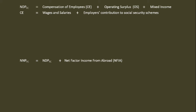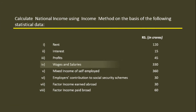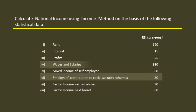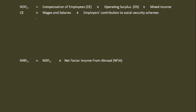Wages and salaries are 330 crores, and employer's contribution to Social Security Scheme is 30 crores. So compensation of employees equals 330 plus 30, which is 360 crores.